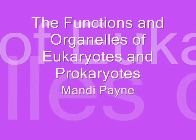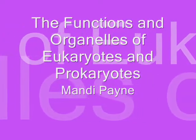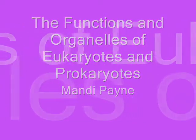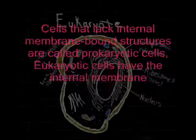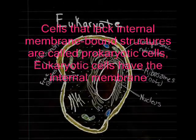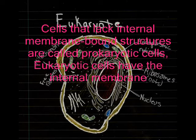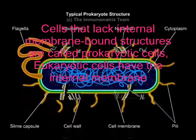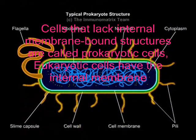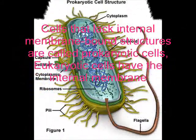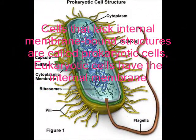The functions and organelles of eukaryotes and prokaryotes. Cells that lack internal membrane-bound structures are called prokaryotic cells. Eukaryotic cells have the internal membranes.